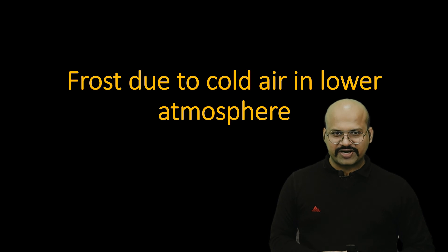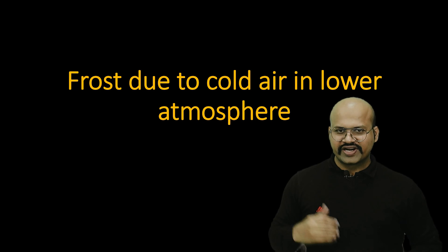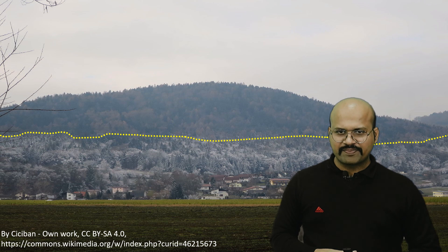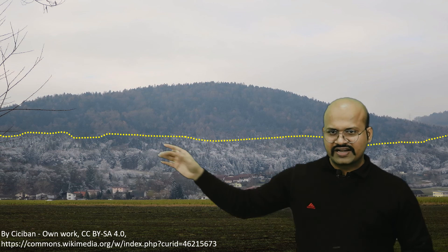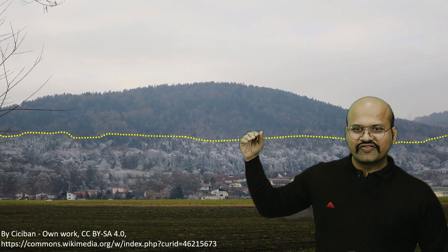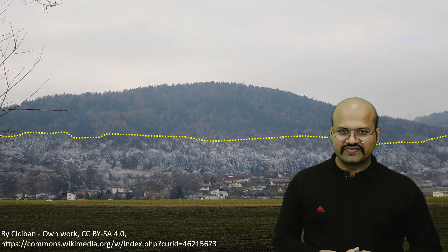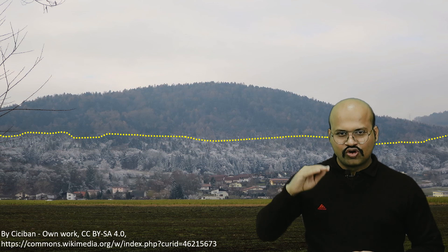Temperature inversion also causes frost in the lower atmosphere. In air drainage inversion, cold air from hilly regions accumulates in valleys, while upper valley air remains warm. Vegetation at the valley floor is exposed to this cold air and can experience frost. This is demonstrated by the fact that plantations below a certain elevation line show frost damage while vegetation above that line remains unaffected.